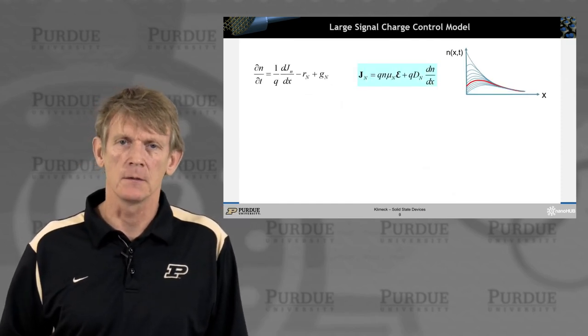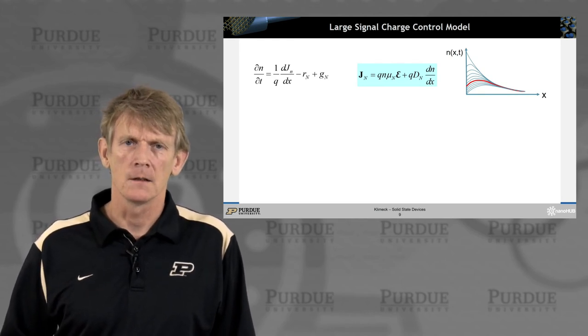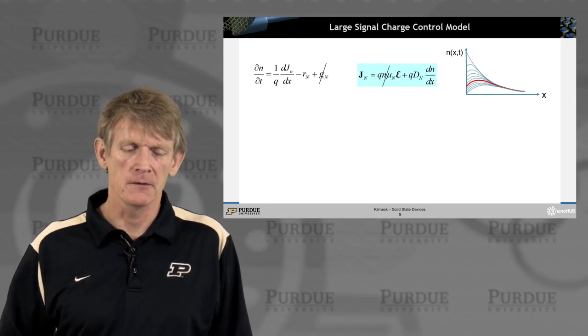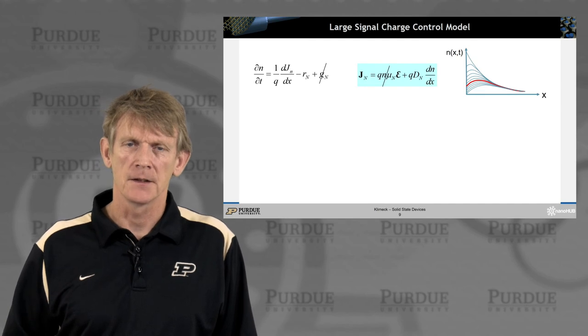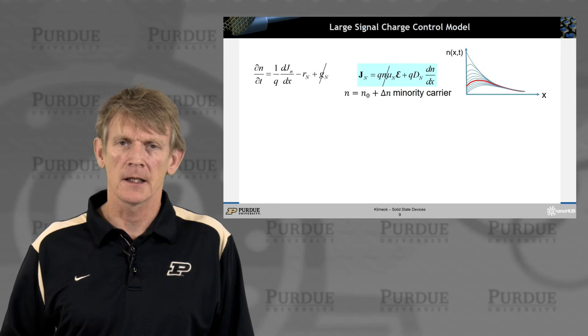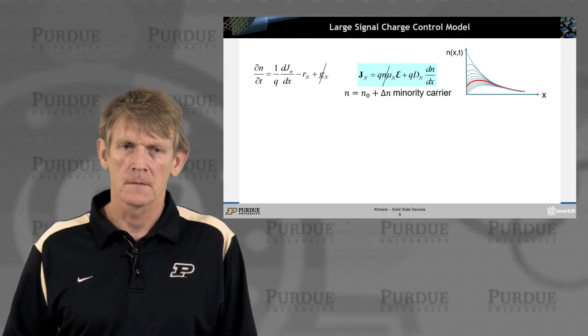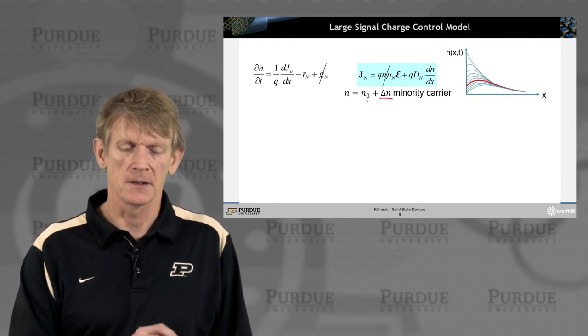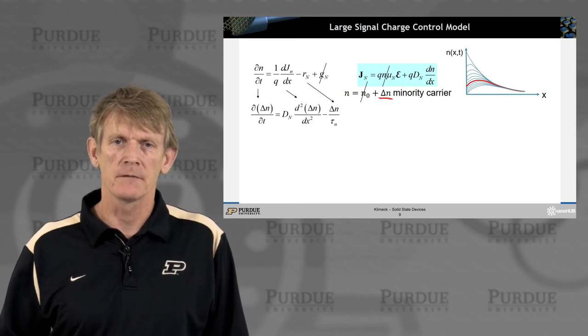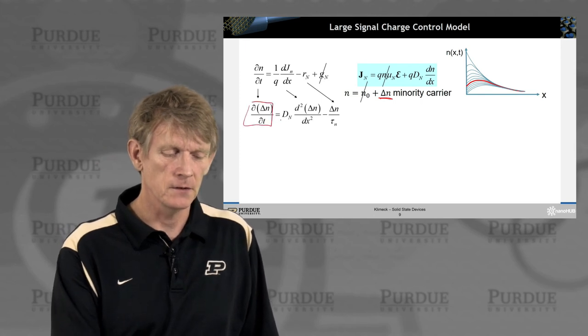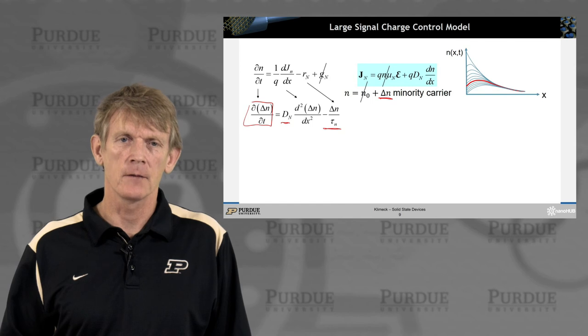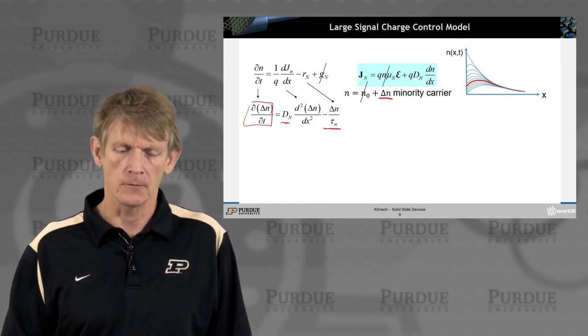So let's carry this calculation through a little bit. So here we are, we have the current continuity equation on the top left, and we have the drift diffusion equation on the right. Let's assume that we don't have carrier generation, and that we don't have an electric field that is on this side, on the P side with the minority carriers. And we're going to write down the electrons, again, as the electrons under equilibrium conditions, and then the minority carrier excess concentration delta n. So we'll carry this delta n around.